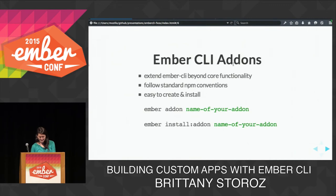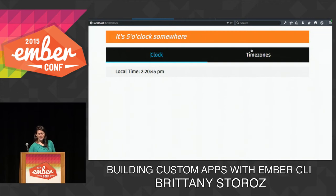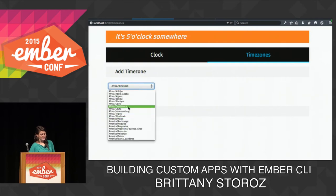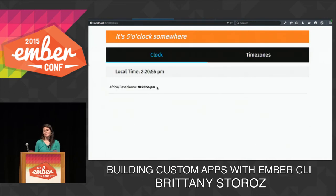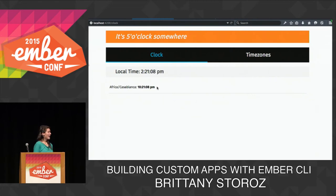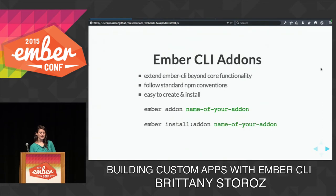We're going to use an application to demo a couple of things. I have an Ember CLI application running on the desktop — it's super simple. It just shows your local time, and you can select different time zones to display and compare against local time. So you'll always know what time it is in any given country. We're going to walk through creating an add-on that turns this application into a Firefox OS application.